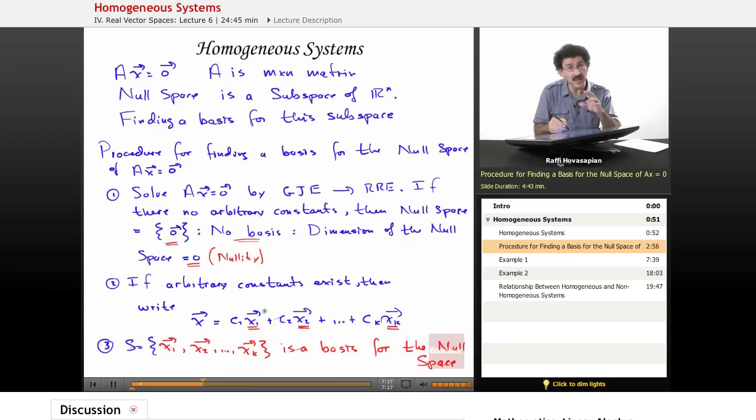If arbitrary constants do exist, meaning if there are columns that don't have a leading entry, then we can read off the solution for that homogeneous system. We can write it this way, and the vectors that we get end up being our basis. Let's do an example, and as always, it'll make sense, hopefully.